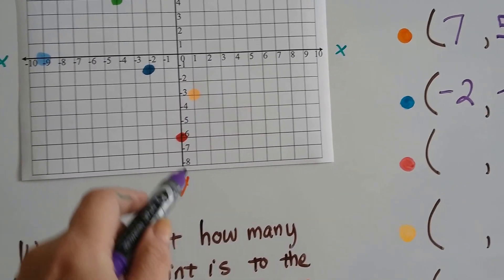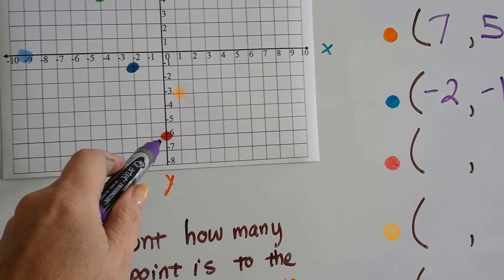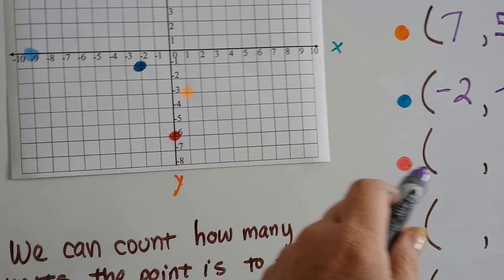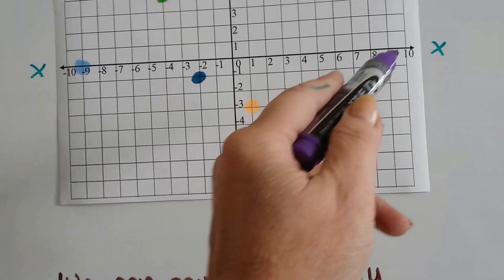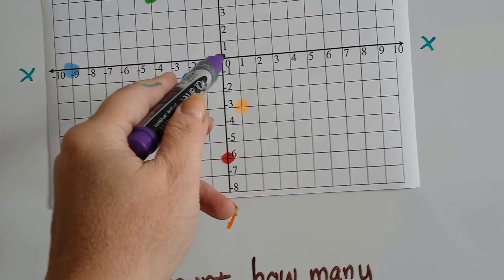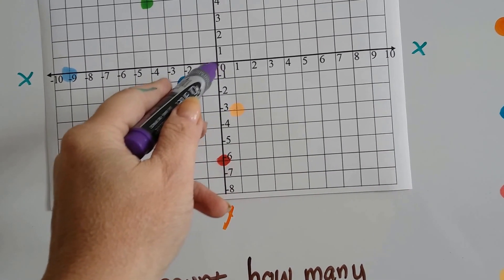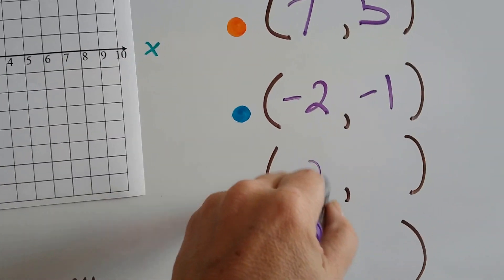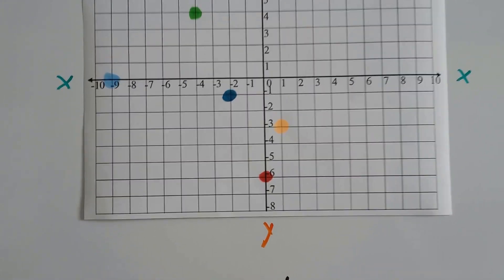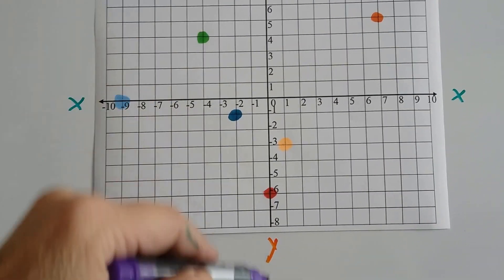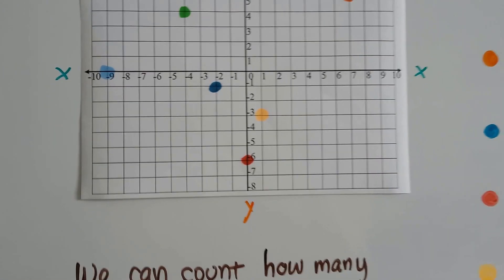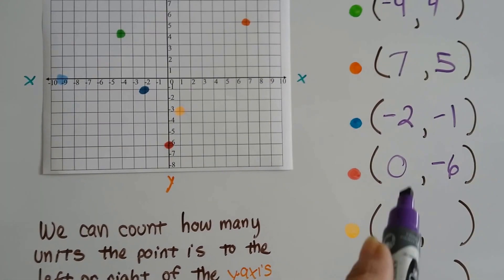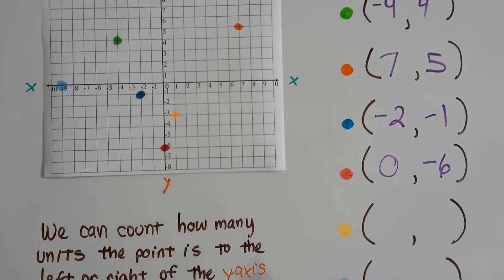Alright, where's this one right here? This is the red one. What is its coordinates? Well, for x, it's on 0. See that? It's right on 0. And where is it for y? Well, here's the y line. It's on negative 6. So it's not in a quadrant at all, is it? Because it's on the line. So its coordinates are 0 and negative 6 for this one.